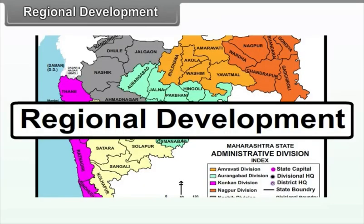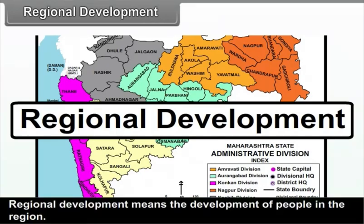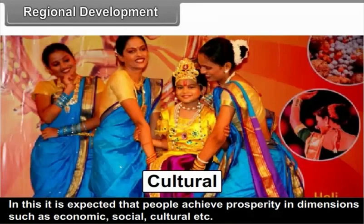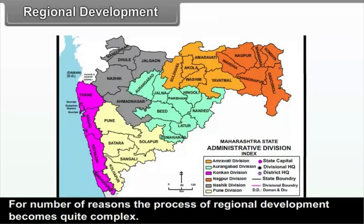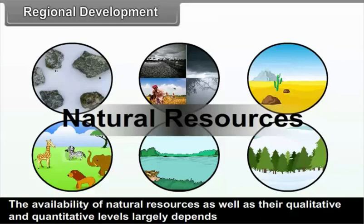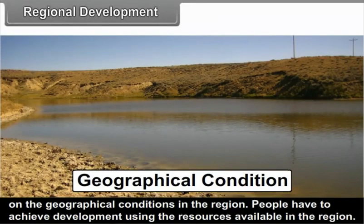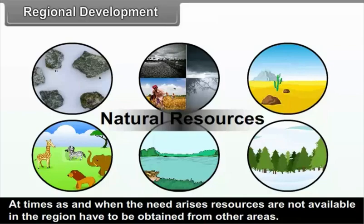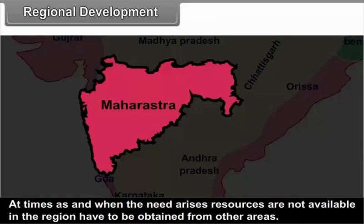8.2 Regional Development means the development of people in the region. It is expected that people achieve prosperity in dimensions such as economic, social, cultural, etc. For a number of reasons, the process of regional development becomes quite complex. Some reasons are related to geographical conditions, while others are associated with social and cultural aspects. The availability of natural resources, as well as their qualitative and quantitative levels, largely depend on the geographical conditions in the region. People have to achieve development using the resources available in the region, and at times resources not available locally have to be obtained from other areas.